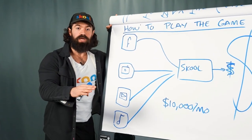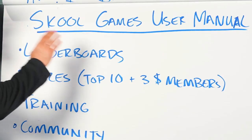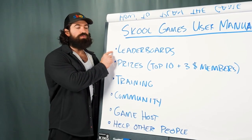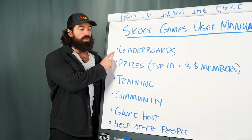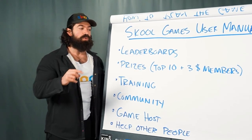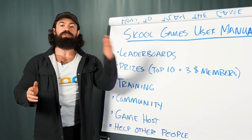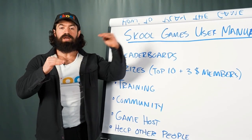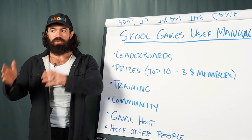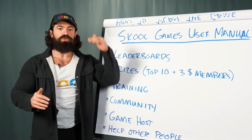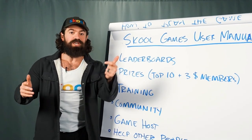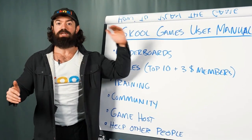Now here's your School Games user manual. Right up front, we have leaderboards. Leaderboards will rank you based on the amount of monthly recurring revenue that you're pushing through School. And here's the key point: every month when we have another School Games, it's about the growth, not about the total. So if you don't win one month, you can still play again the next month and try to win, because you're going to learn things over time and something might just click in month two that gets you to the next level to get on the leaderboard.